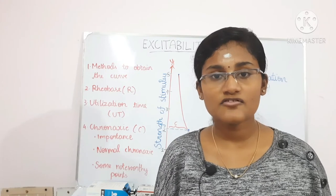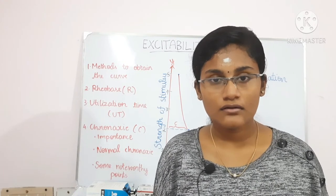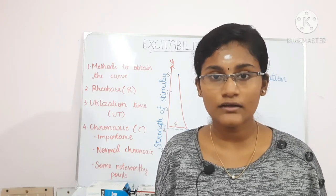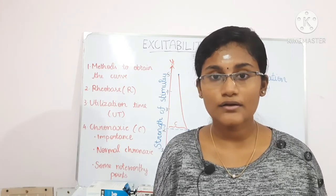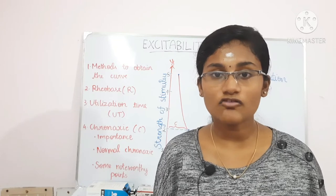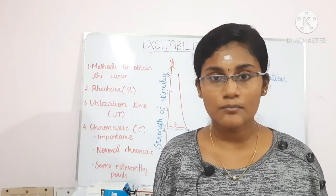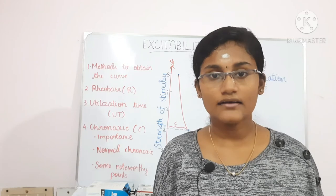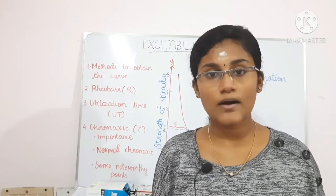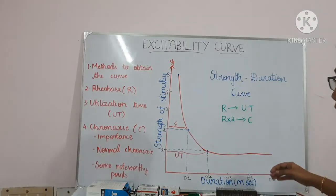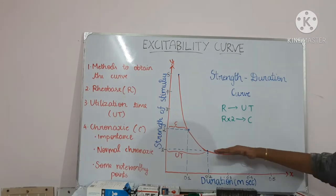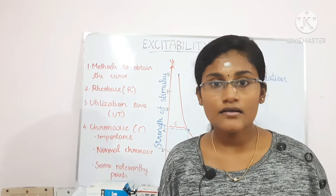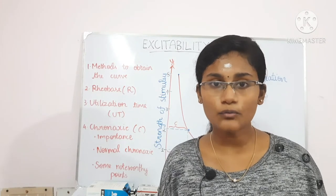Rheobase is the minimum strength required to excite a tissue, whatever may be the duration. Rheobase also has another name — it is called the threshold strength. In this graph you can see that below 1 volt the tissue is not getting excited, so in this graph rheobase is equal to 1 volt.